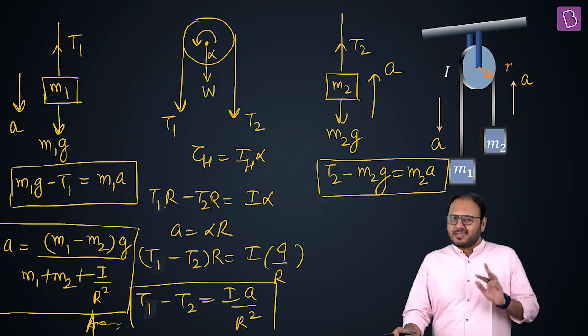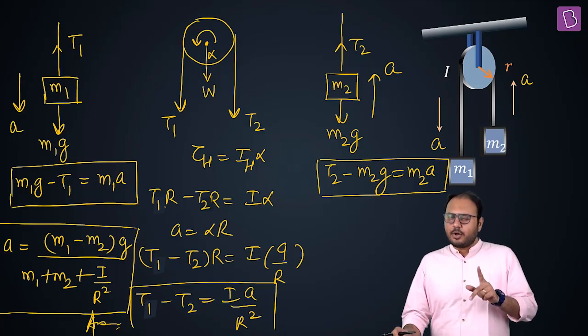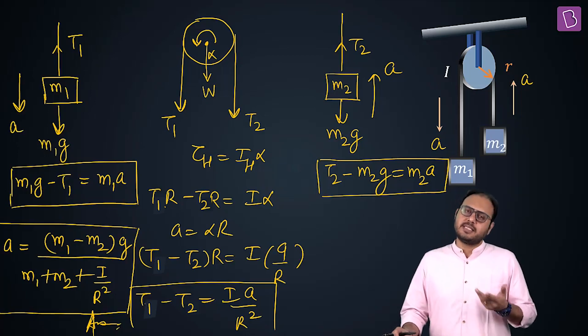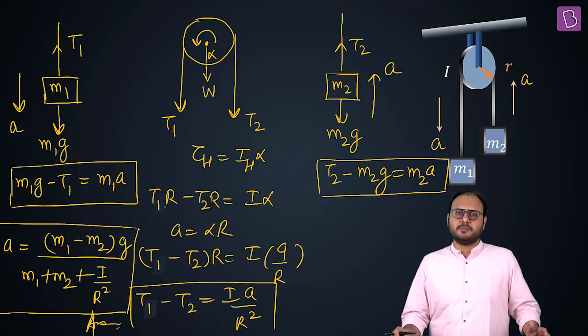Do you realize that in the laws of motion chapter, the term I/r² in the denominator was not there? Except for that term, everything else was the same.